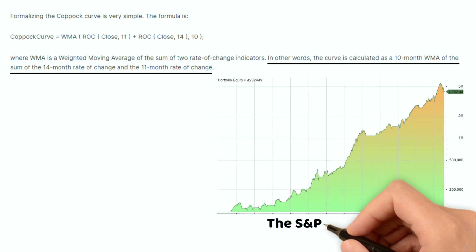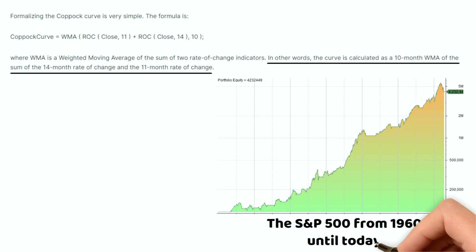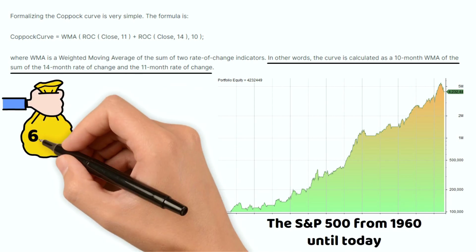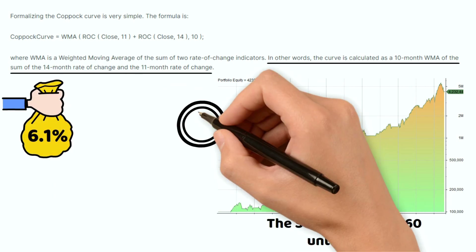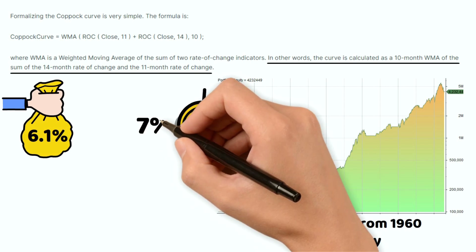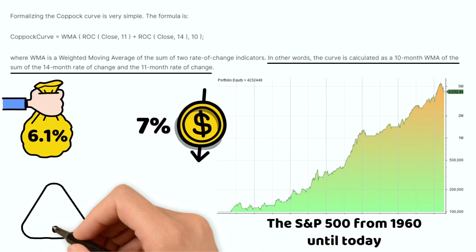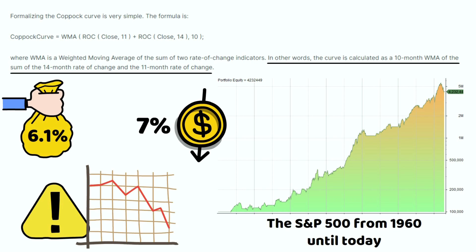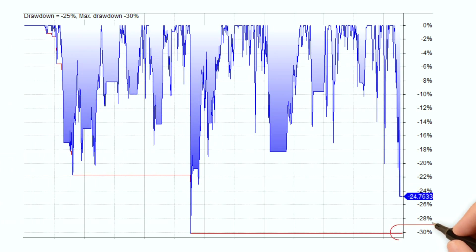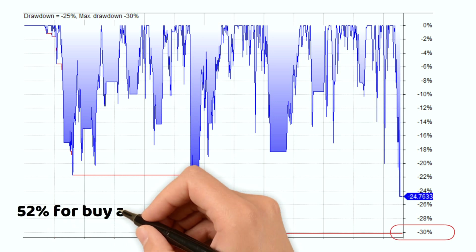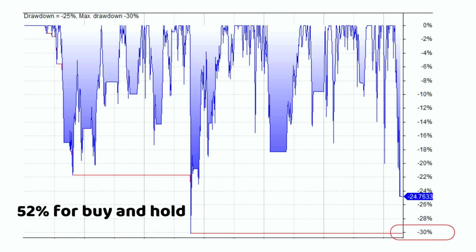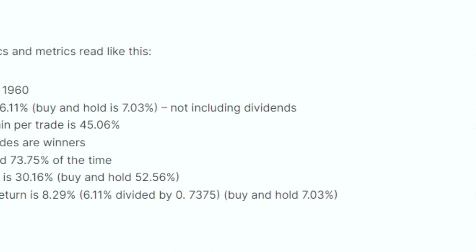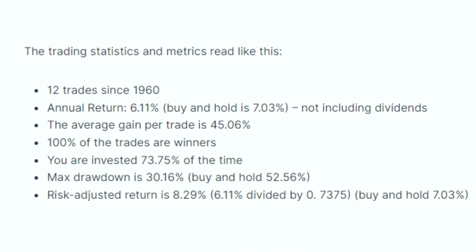Our backtest of the Copac curve on the S&P 500 from 1960 until today showed a 6.1 percent average annual return — slightly lower than the market's 7 percent. However, risk and volatility matter too. The Copac curve shows a significantly lower maximum drawdown of 30 percent compared to 52 percent for buy-and-hold, meaning a smoother ride. Its risk-adjusted return of 8.2 percent beats the market's 7 percent, suggesting it delivered better returns per unit of risk.